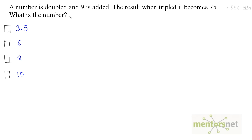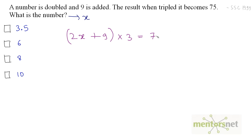Let us say the number is x. This number is doubled, so we have 2x, and 9 is added, so plus 9. This result, when multiplied by 3, gives you 75. So we have 3 times (2x + 9): 3 times 2x is 6x, plus 3 times 9 is 27, equals 75.